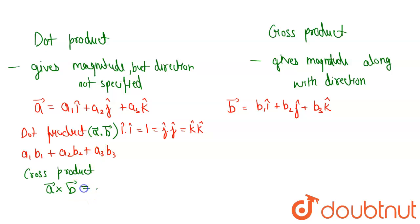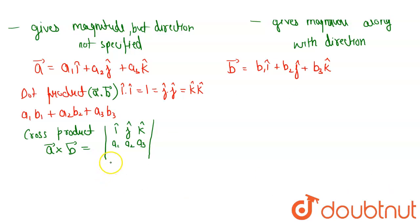So the cross product will be consisting of a determinant in which row 1 is i cap, j cap, and k cap. In row 2, it will be consisting of coefficient of i cap, j cap, and k cap of vector a. So this will be a1, a2, a3. Now in row 3, it will be consisting of coefficient of i cap, j cap, and k cap of vector b. So this will be b1, b2, and b3.